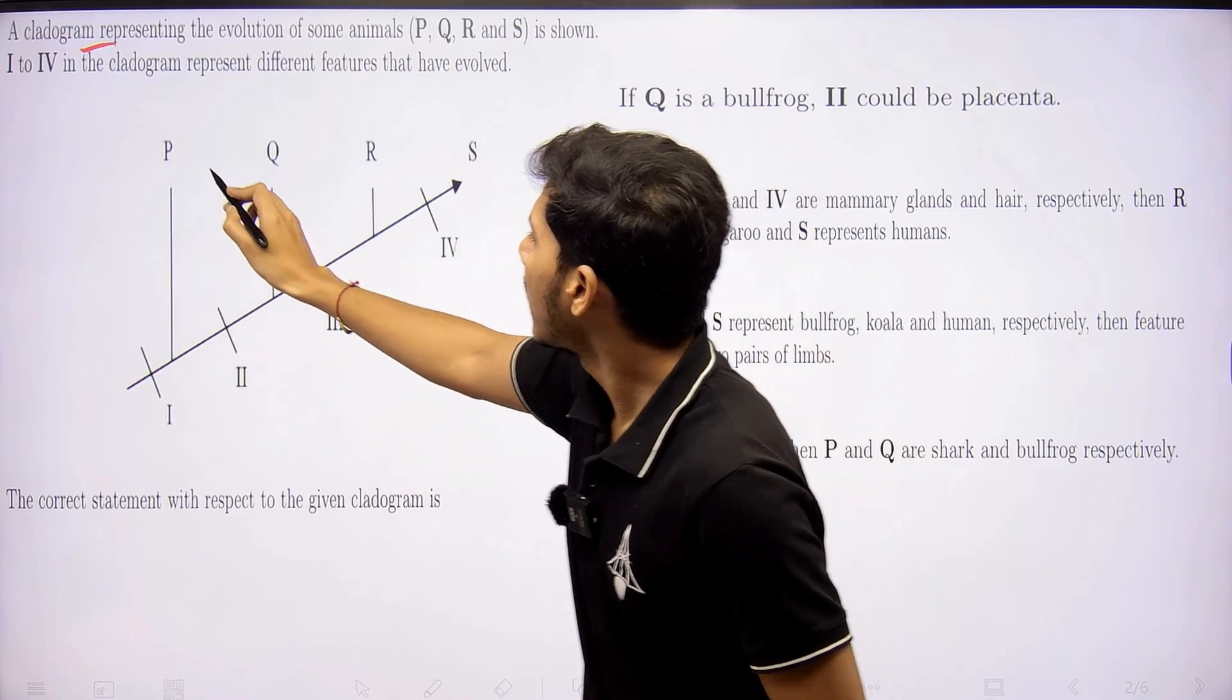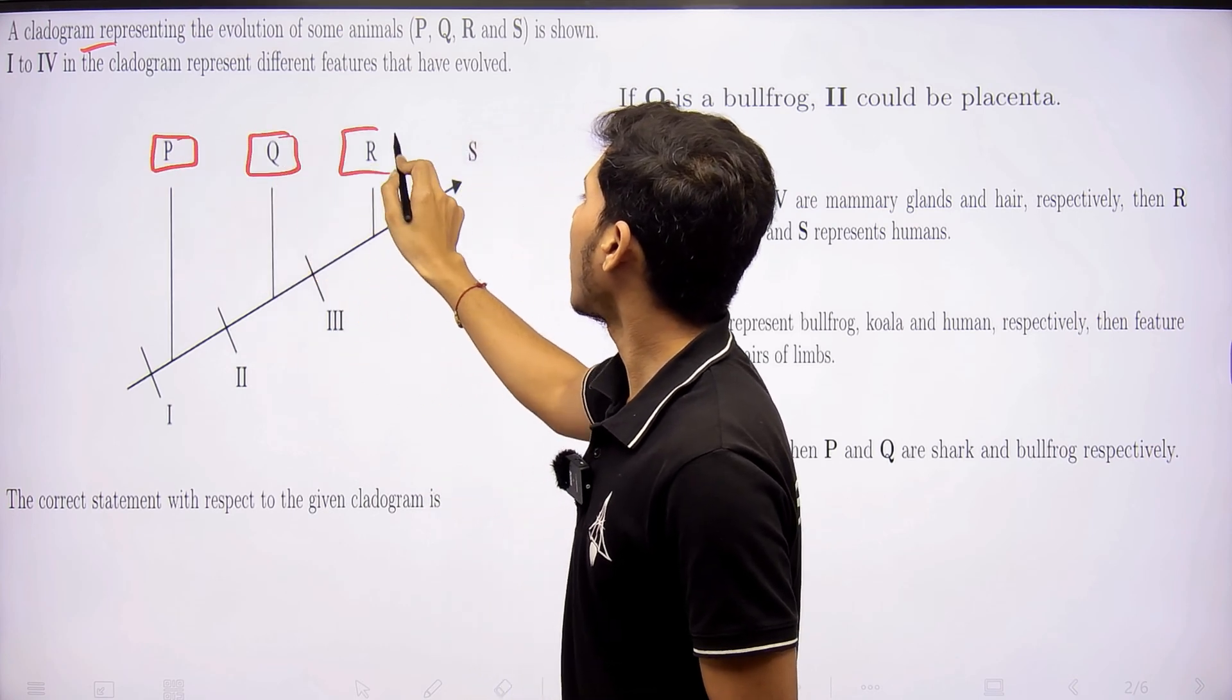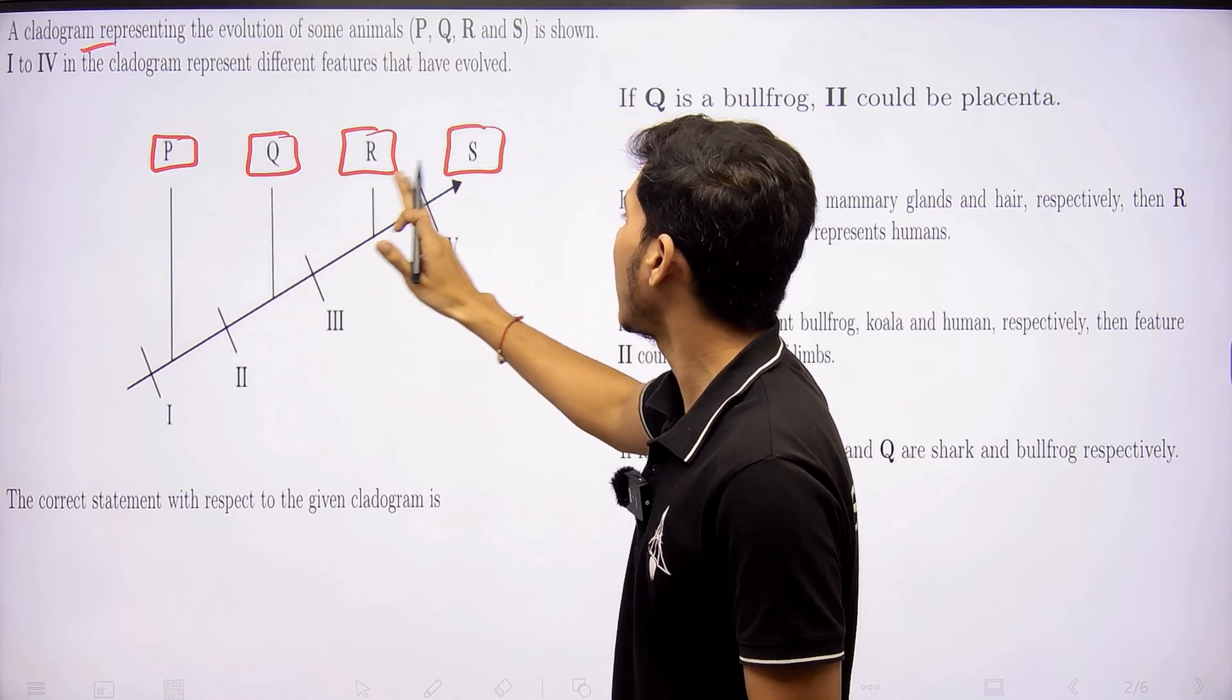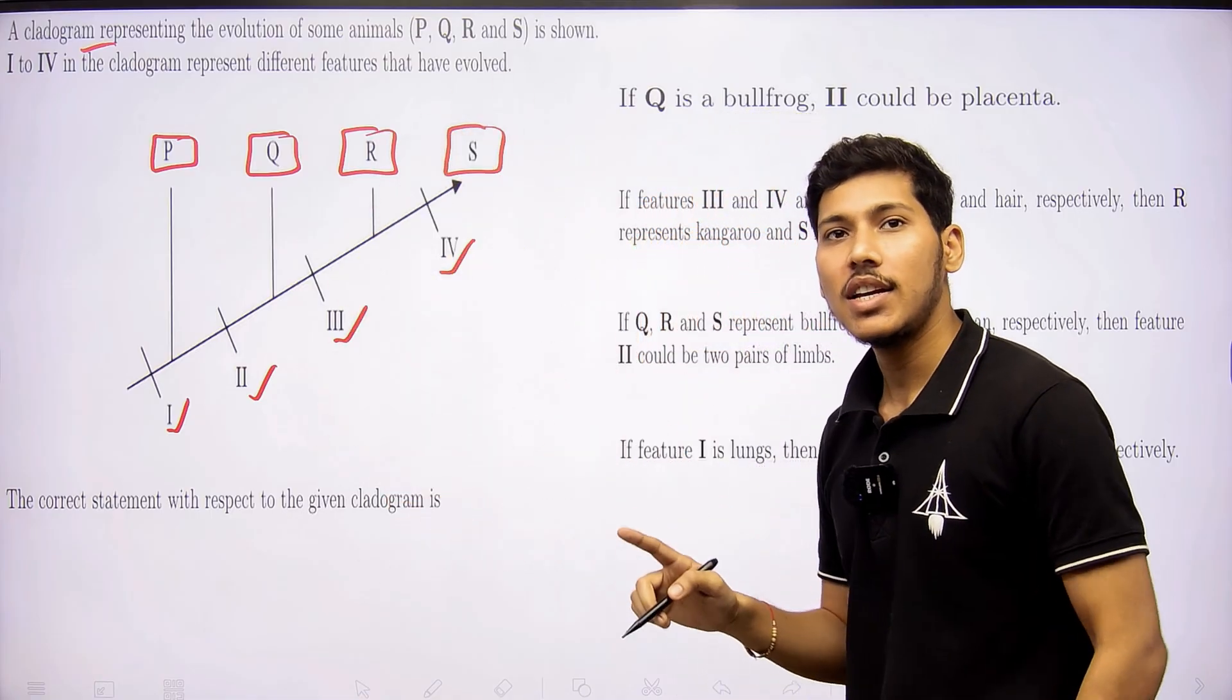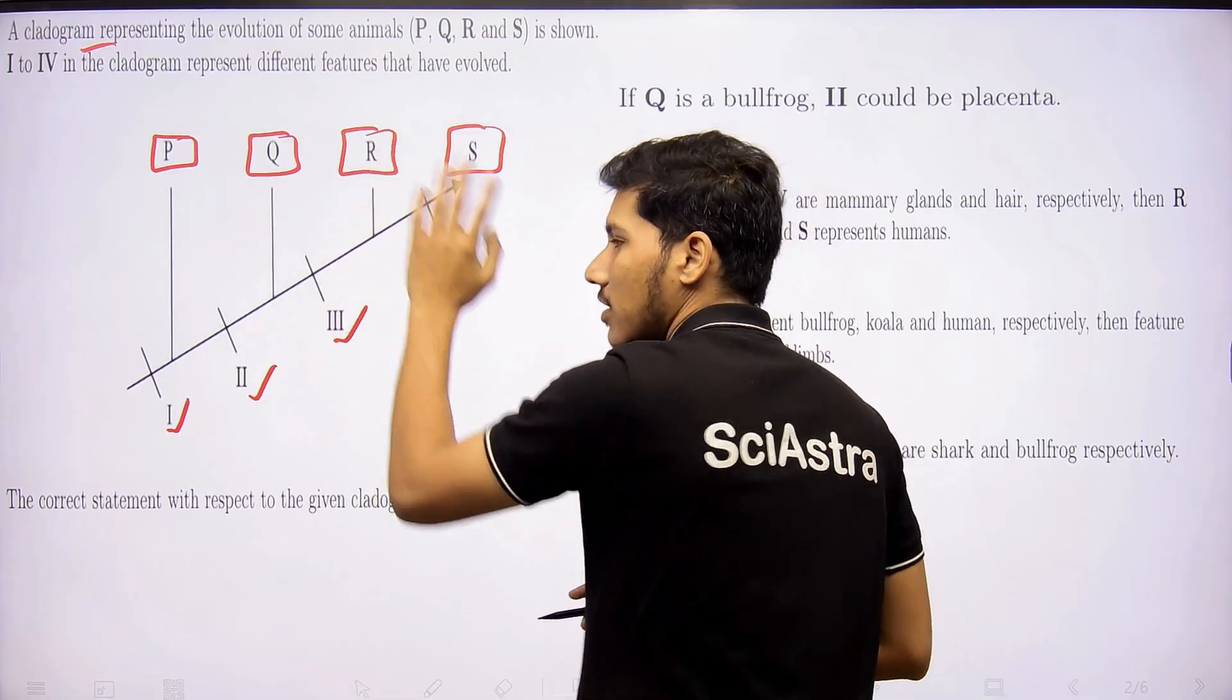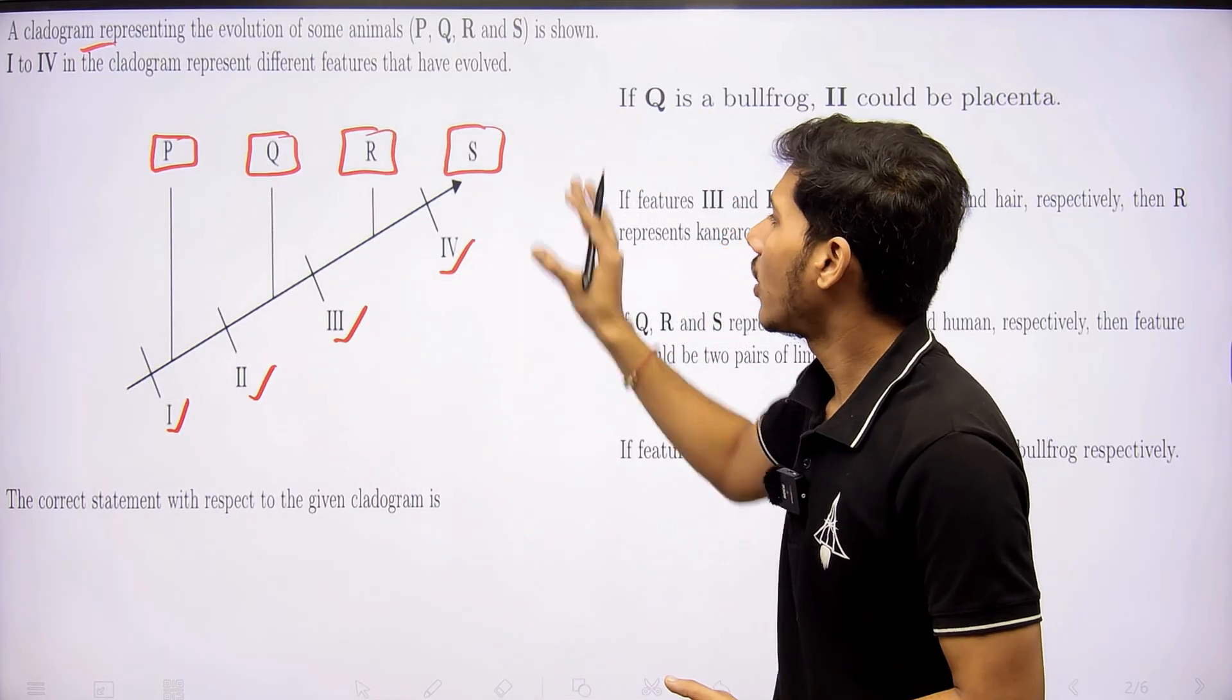So they have given four organisms P, Q, R and S. And they have placed it separately on the basis of certain property 1, 2, 3 and 4. And the question is asking which property corresponds to which organisms. So basically we have to tell the correct statement according to this cladogram.